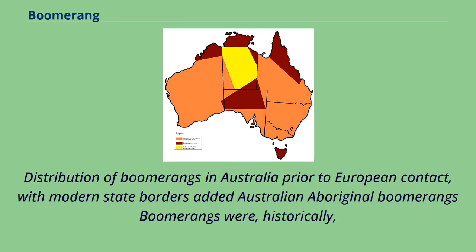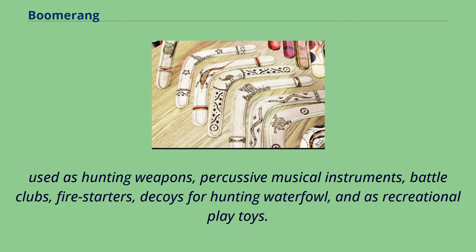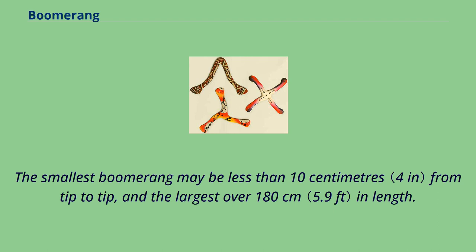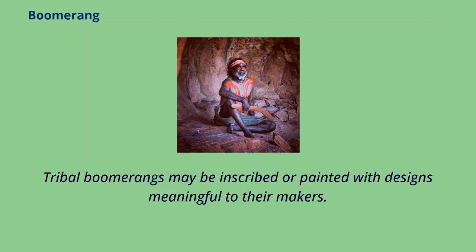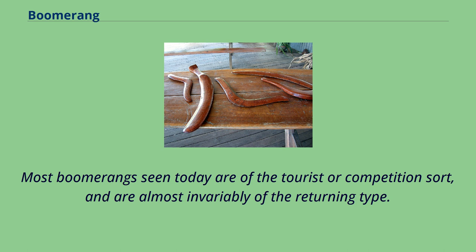Boomerangs were historically used as hunting weapons, percussive musical instruments, battle clubs, fire starters, decoys for hunting waterfowl, and as recreational play toys. The smallest boomerang may be less than 10 centimetres from tip to tip, and the largest over 180 centimetres in length. Tribal boomerangs may be inscribed or painted with designs meaningful to their makers. Most boomerangs seen today are of the tourist or competition sort, and are almost invariably of the returning type.